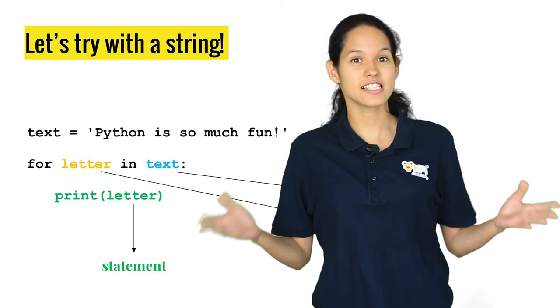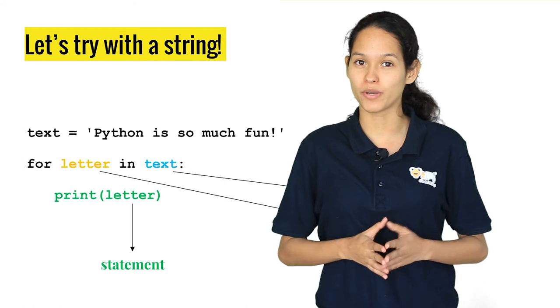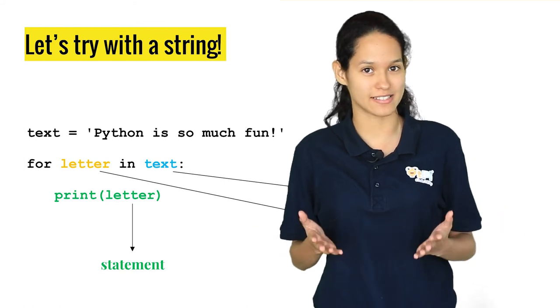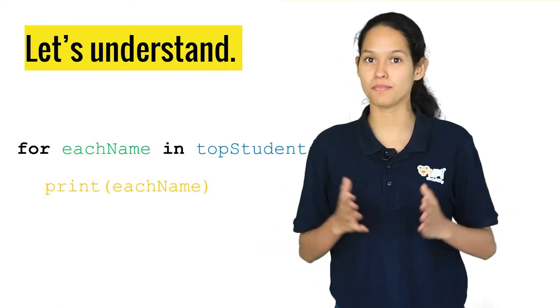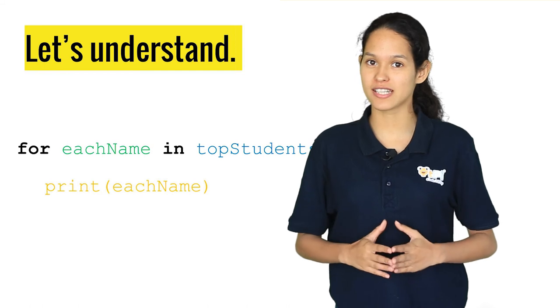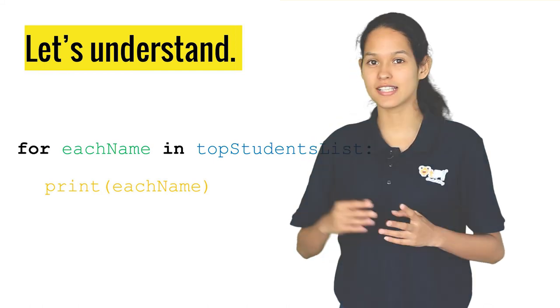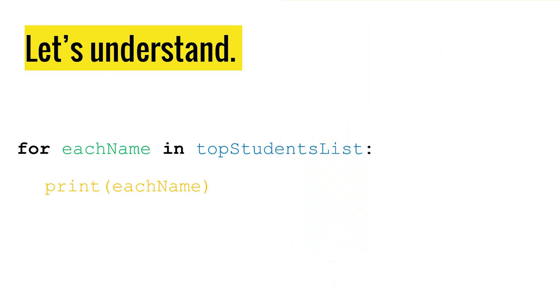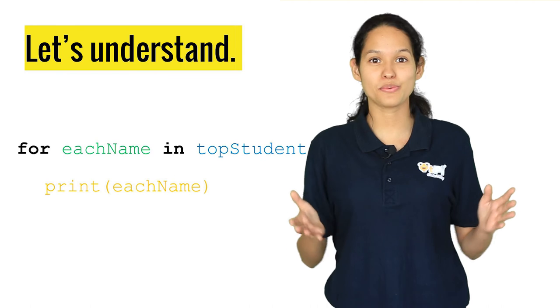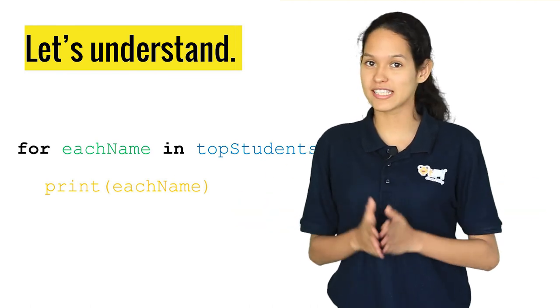This is how you can add a for loop in your code with lists and strings. In this example where we print the top rank students' names, the for loop we use is: for eachName in topStudentsList: print(eachName). In this way, each name from the list will be printed.